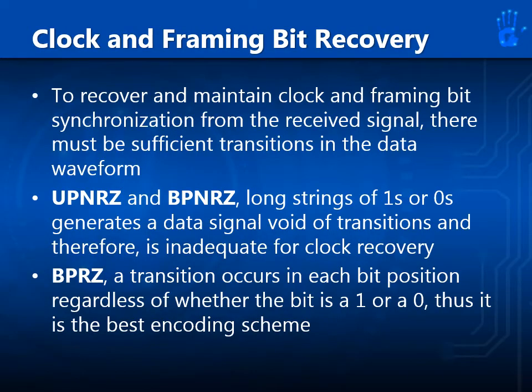Clock and framing bit recovery: to recover and maintain clock and framing bit synchronization from the received signal, there must be sufficient transitions in the data waveform. UPNRZ and BPNRZ generate a data signal void of transitions during long strings of ones or zeros, and therefore are inadequate for clock recovery. With BPRZ, a transition occurs in each bit position regardless of whether the bit is one or zero — thus it is the best encoding scheme for this purpose.